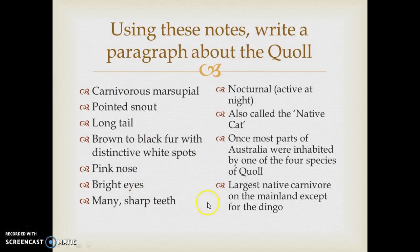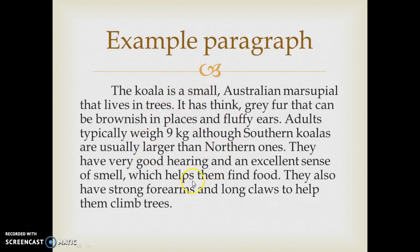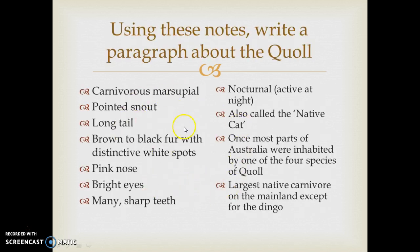Now we're going to use these notes to write a paragraph about the quoll. The quoll is a native cat and is a marsupial — these notes describe what it looks like and some other information. You can go back and use the koala paragraph as a model. If you're a teacher, you can pause the video now and get students to write that paragraph. If you're studying at home, pause and write it yourself. Feel free to post your paragraph in the comments below — I'd love to read them.